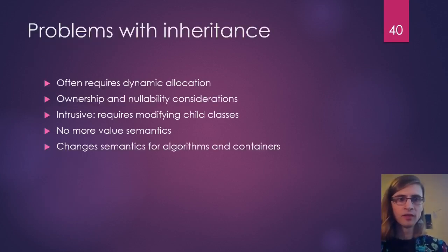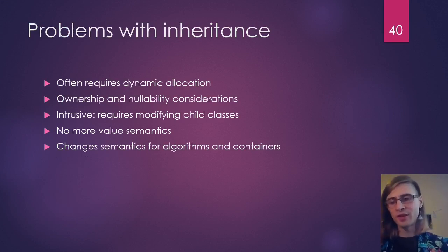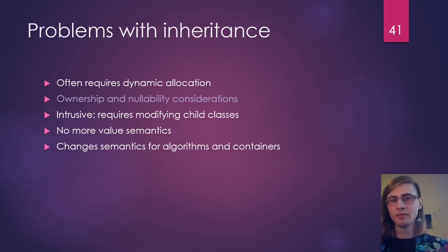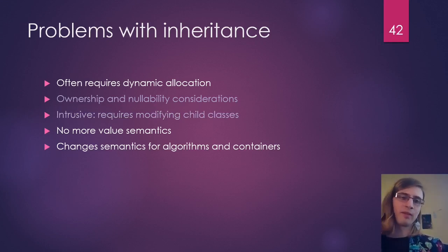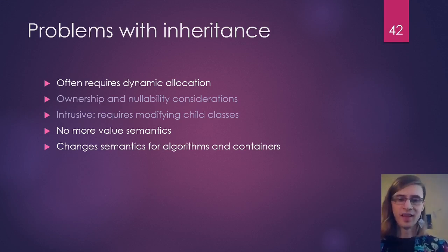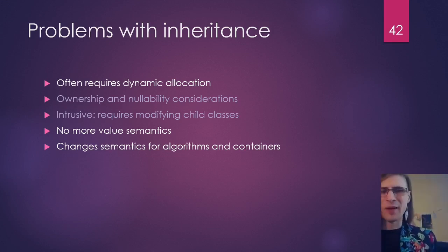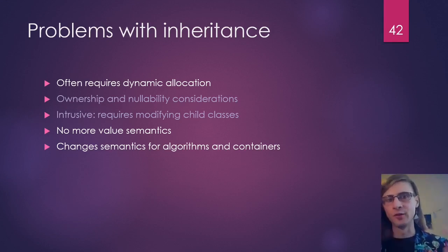So these were our problems with inheritance, and we've solved some of them. Now that we're handling memory allocation internally, we don't have the ownership and nullability considerations anymore — it's just an object, it can't be null, we know who owns it, it's managing its own memory. We've also got rid of the intrusiveness problem — we don't need to modify the child class or decorate it with inheritance from the base class. It all just works. But we still have three other problems remaining.